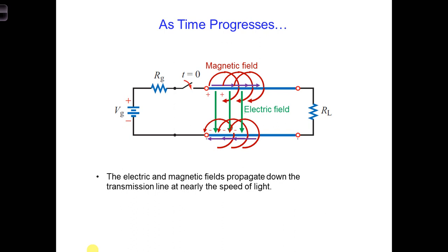The type of transmission line we've been talking about is a transverse electromagnetic, or TEM, transmission line. These are transmission lines where the electric and magnetic fields are both perpendicular to each other and are also both perpendicular to the direction of propagation.